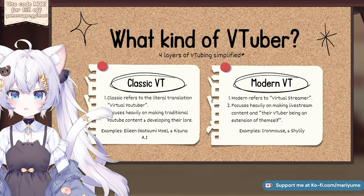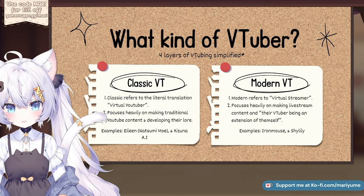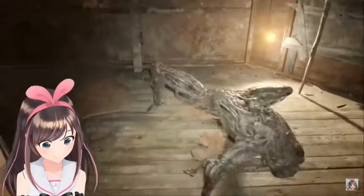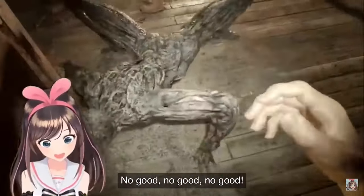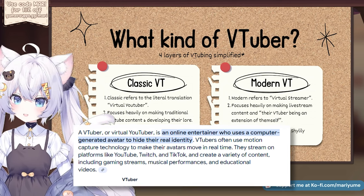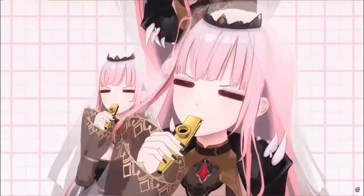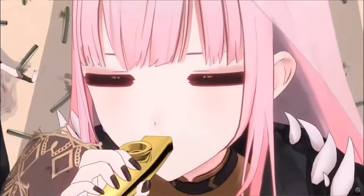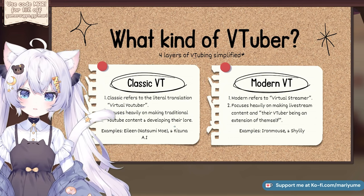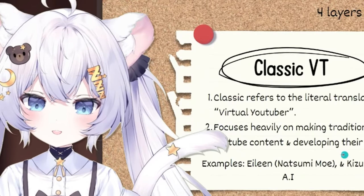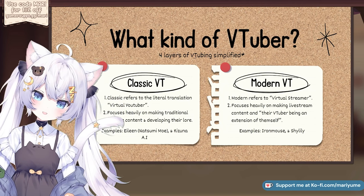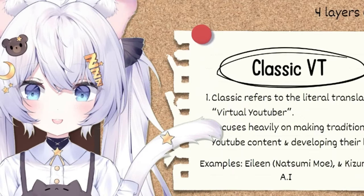What kind of VTubers are there? We have what I call classic VTubers, and then modern VTubers. Classic refers to the literal translation of what a VTuber was when it was coined back in the day with Kizuna Ai — which is virtual YouTuber. That means they focus heavily on making traditional YouTube content and developing their lore. They are what you can consider a character, a persona. They have kayfabe. They have a whole world around them. They focus on making content that is involved around their lore. That doesn't necessarily mean it's a lore video, but it's like — how does this character play Dark Souls? How does this character talk to, I don't know, Wendy's, if they were talking to a corporation or something? That is a classic VTuber.